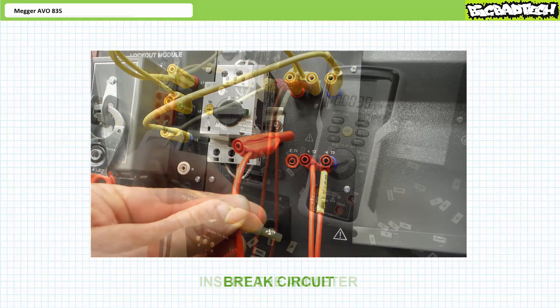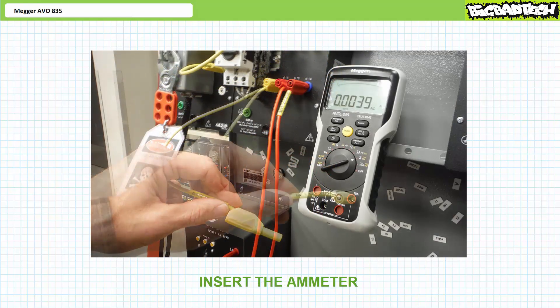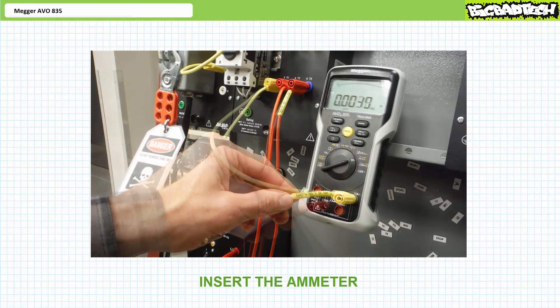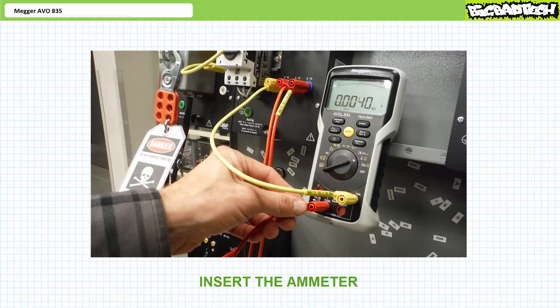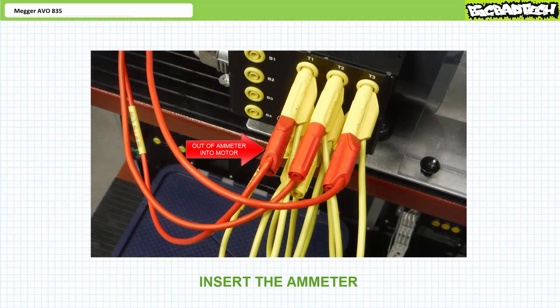Now we need to insert the ammeter. Out of the manual motor starter, into the ammeter in door. Through the ammeter, out of the ammeter common out door, into the motor.